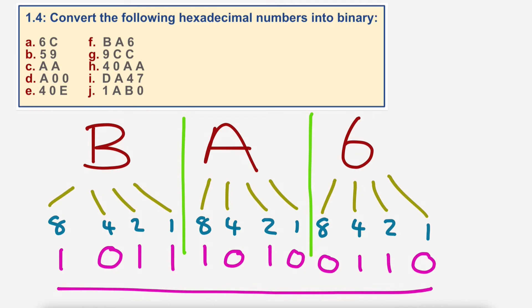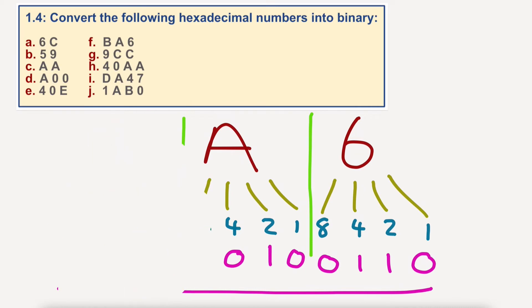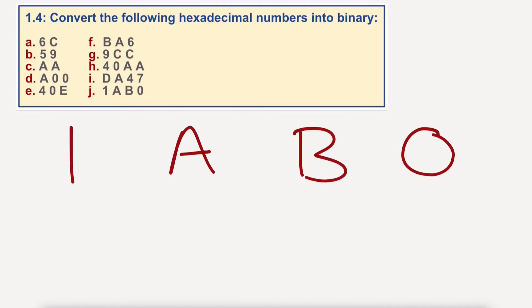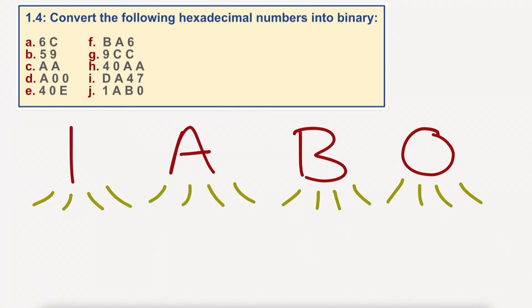I'll do one final one and then I will give you the answers. Let's do the last one — J. I've got number 1, A, B, 0. We will split these and put eyelashes on them.